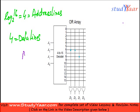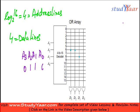So what would that input be? Let us write A3, A2, A1, A0. I want to select the line having an index of 6, so I am going to give the binary equivalent of 6: 0, 1, 1, 0 to these lines.